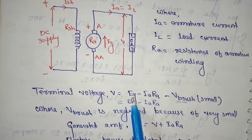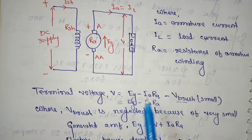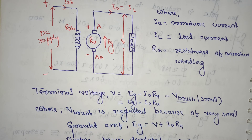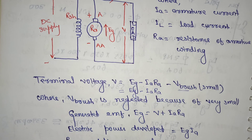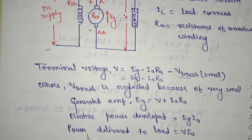From the above diagram, the generated EMF Eg is equal to V plus (Ia × Ra). The electric power developed is equal to Eg × Ia. The power developed to the load is V × Ia. These are all very important concepts for electrical students. Thank you.